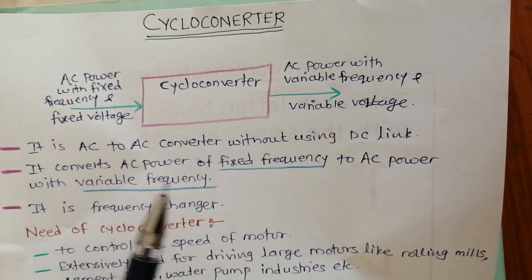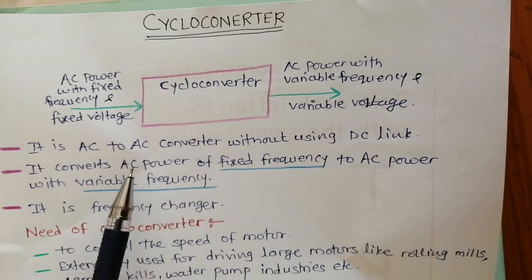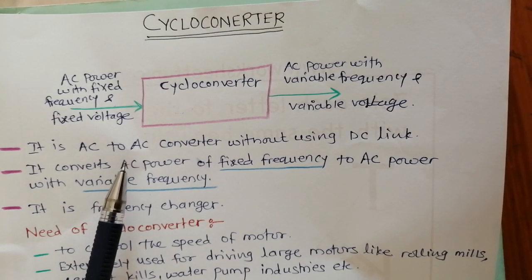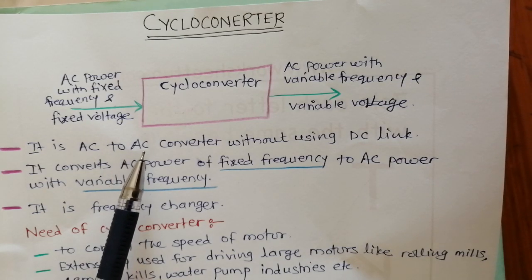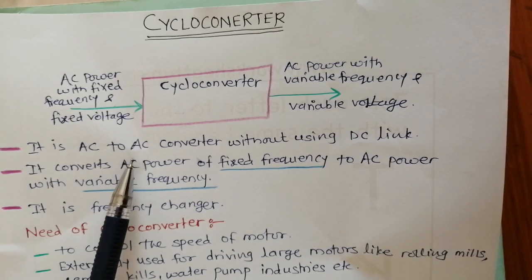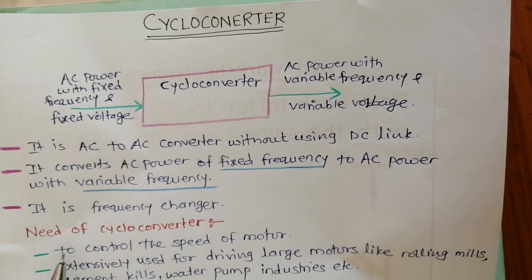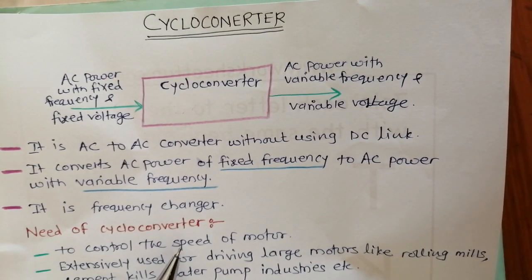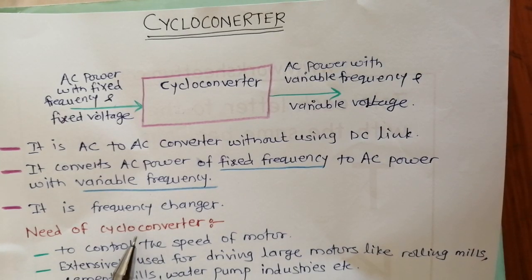To convert the AC signal into an AC signal with variable frequency and voltage, the cycloconverter uses power electronic switches like thyristors, triacs, and diacs as switching elements. These switches operate in a logical manner. Cycloconverters are used to control the speed of motors and are extensively used for driving large motors in rolling mills, cement kilns, and water pump industries.